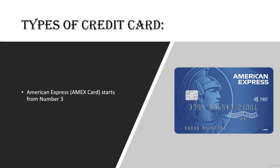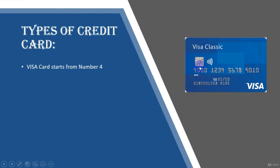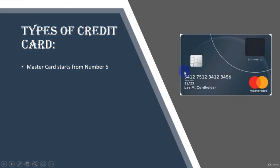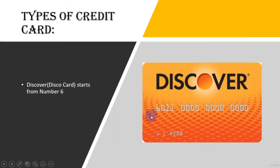Types of credit card: American Express (Amex) starts with the number 3. Visa card starts with number 4. Mastercard starts with number 5. Discover card starts with number 6. The starting number differs because each card belongs to a different company.